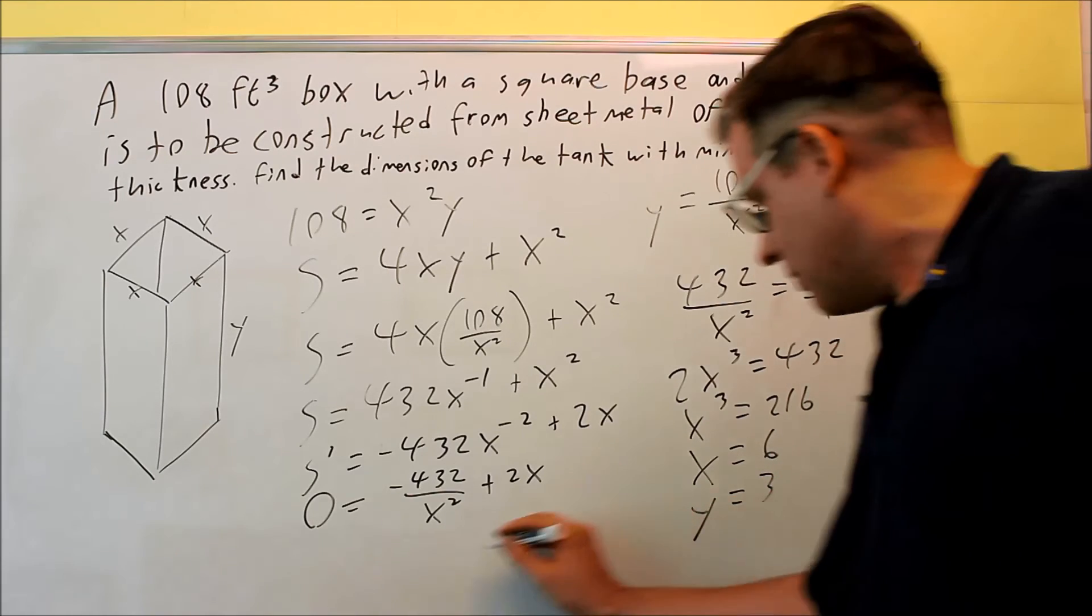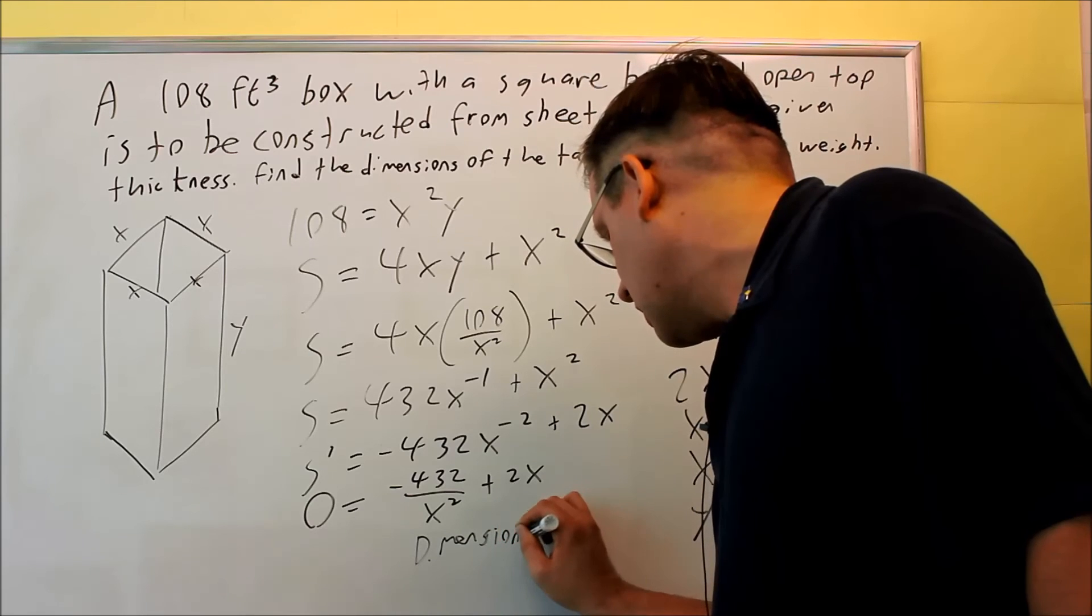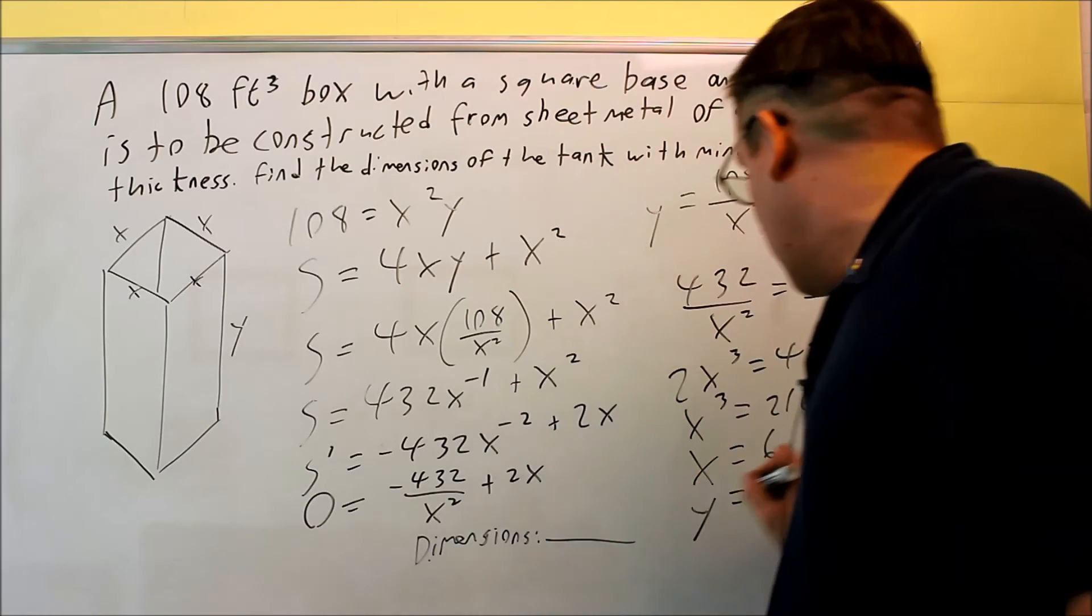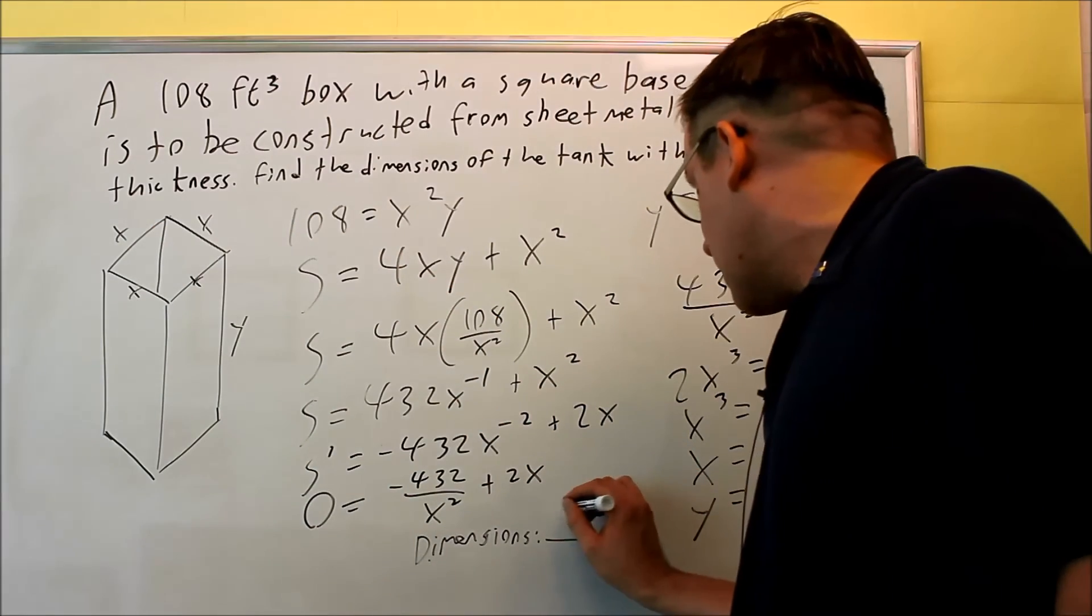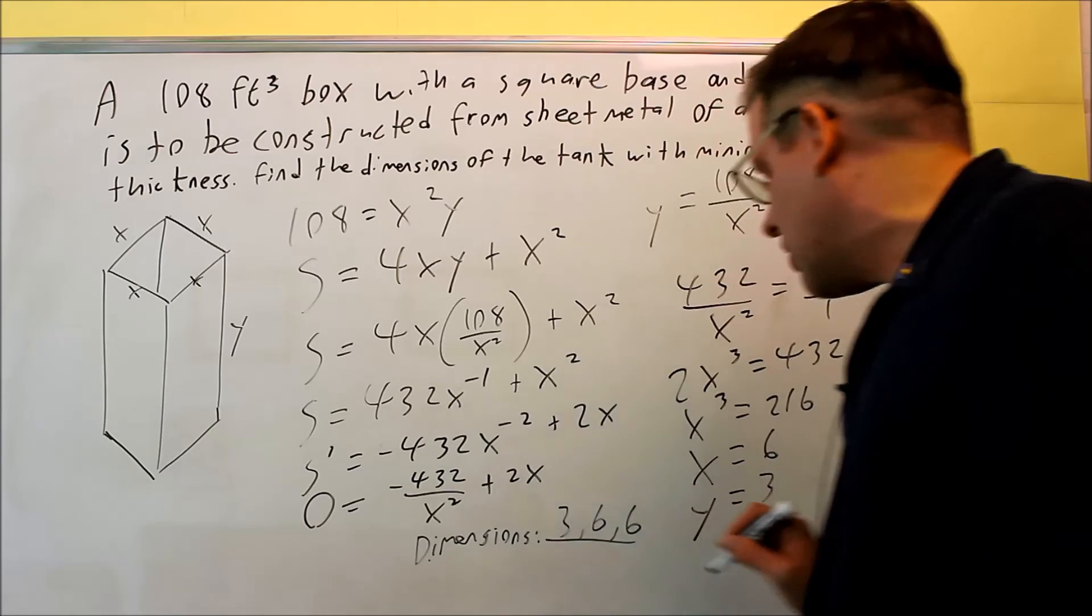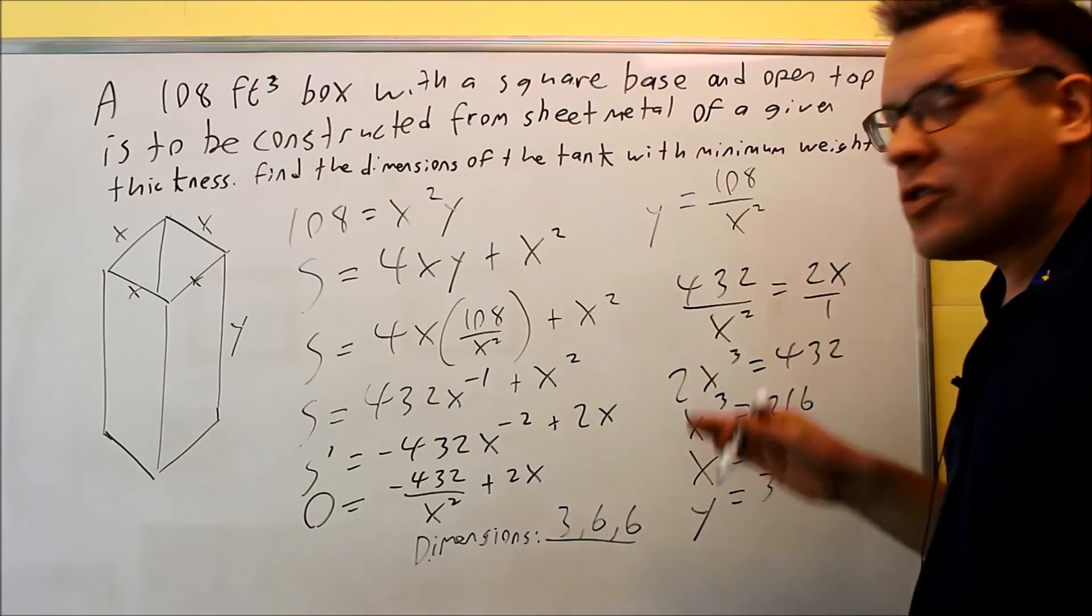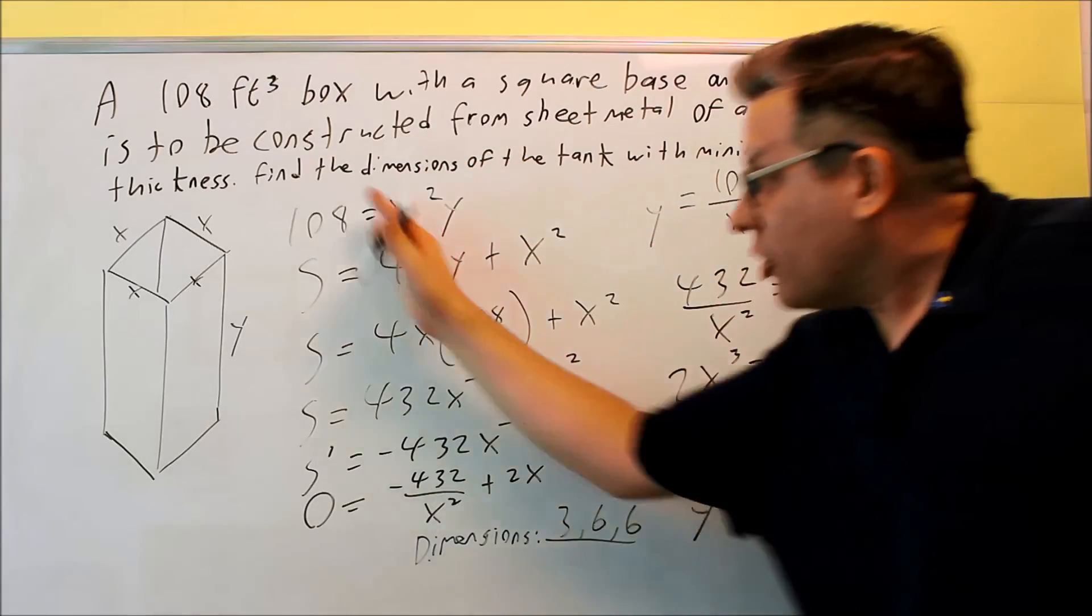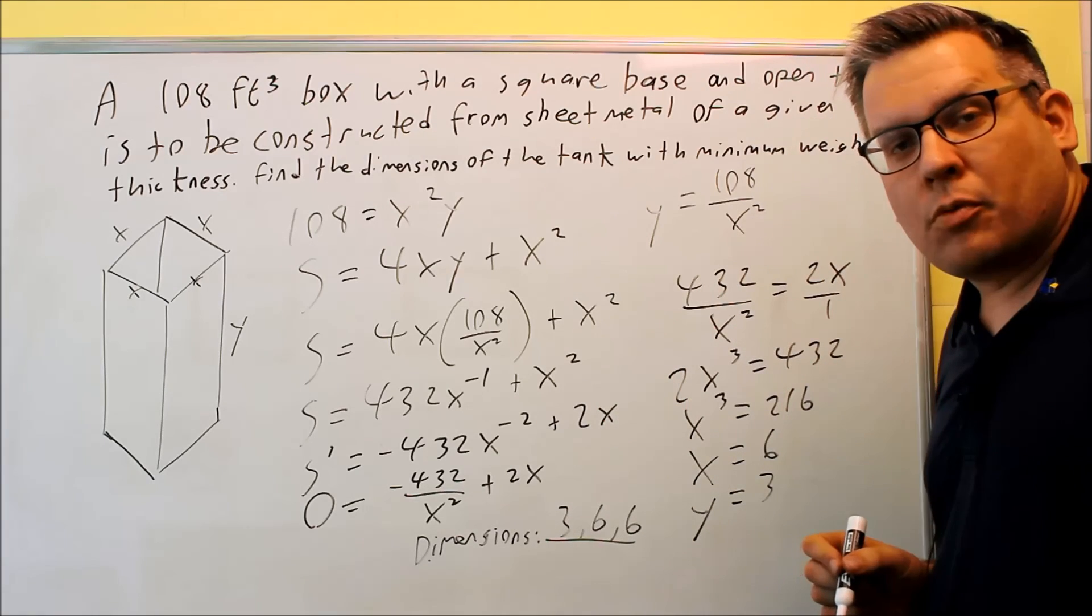So the dimensions, if it asks for that, I'm going to go ahead and put that in. That's going to be, I have two X's, so I have two 6's. So it's basically going to be 3, 6, and 6. That's going to be your three dimensions that you would put in here. These dimensions would guarantee that you have the least amount of actual material used to make the box, and that's going to end up resulting in the minimum weight.